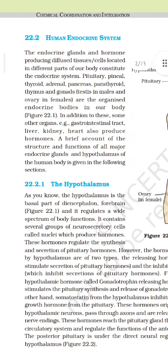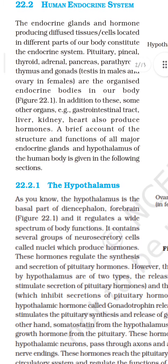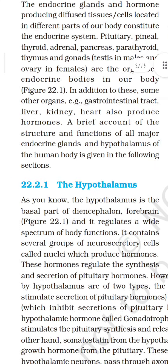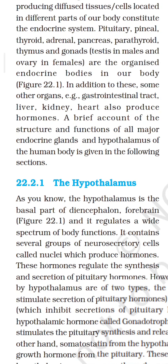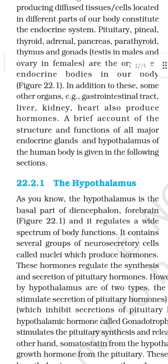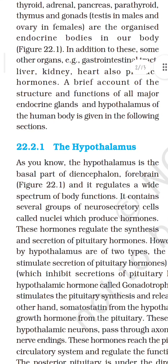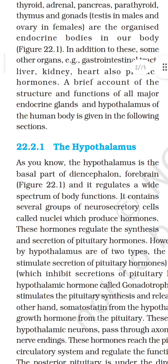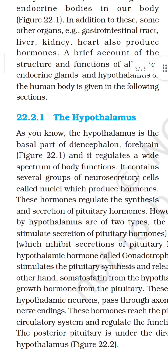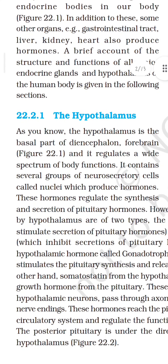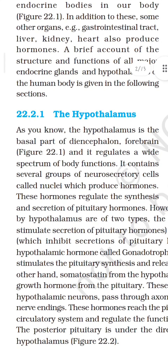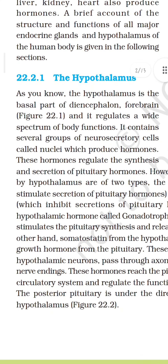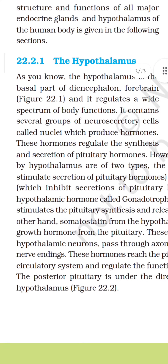Human endocrine system. The endocrine glands and hormone-producing diffused tissues or cells located in different parts of our body constitute the endocrine system. Pituitary, pineal, thyroid, adrenal, pancreas, parathyroid, thymus and gonads — testes in males and ovaries in females — are the organized endocrine bodies in our body. In addition, some other organs such as the gastrointestinal tract, liver, kidney and heart also produce hormones. A brief account of the structure and functions of all major endocrine glands and the hypothalamus is given in the following section.